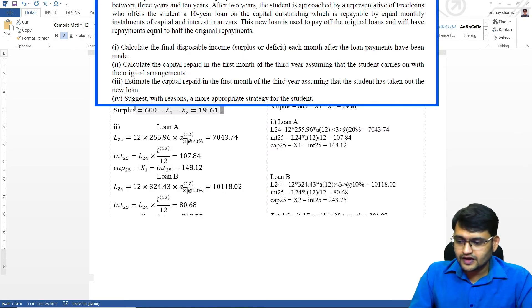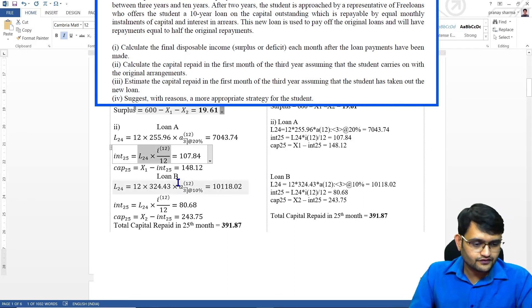Then for loan B we will have to do the same thing. So we have our loan outstanding formula, we have our interest component, capital component, and we get our total repaid in 25th month.